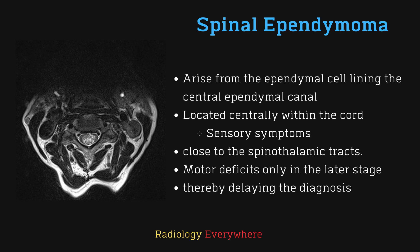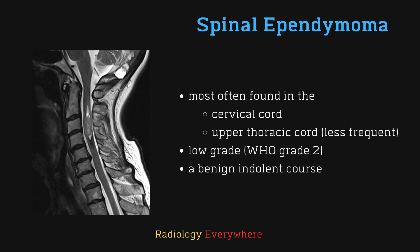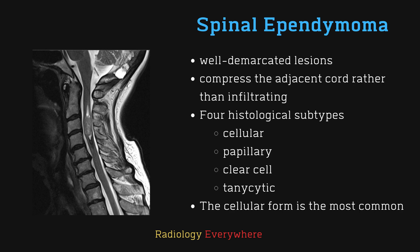The diagnosis can be delayed because motor deficits occur only in the late stage of the disease. Ependymomas related to NF2 are usually asymptomatic, and these intramedullary ependymomas are most often found in the cervical cord and less frequently in the upper thoracic cord. Ependymomas are categorized as low grade WHO grade 2 with a benign indolent course.